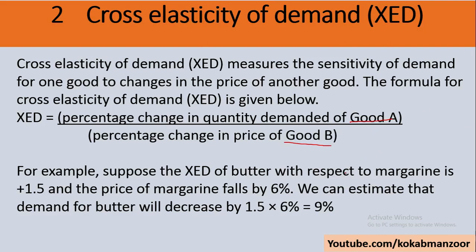For example, the cross elasticity of butter with respect to margarine is 1.5. If the price of margarine falls by 6%, we can estimate that the demand for butter will change by 1.5 multiplied by 6%, which equals 9%. So substitute products typically show a cross elasticity of demand relationship.